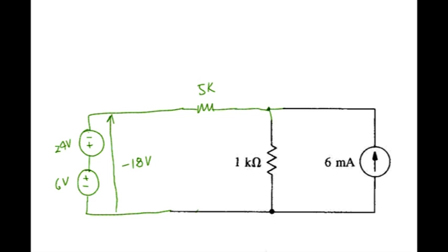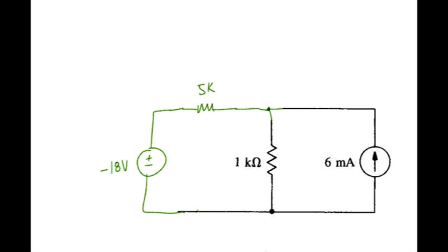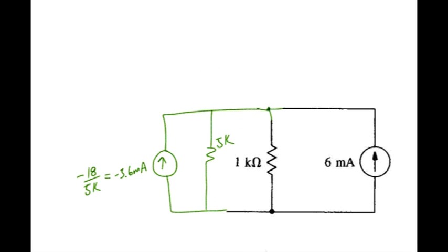So let me combine those into one equivalent voltage source. Eventually I want to get the 5k resistor in parallel with the 1k. So let me go ahead and do a conversion to current source form. So current source is 18 volts divided by 5k, that's minus 3.6 milliamps. The 5k can combine together with the 1k resistor into a parallel combination, leading to 833 ohms.